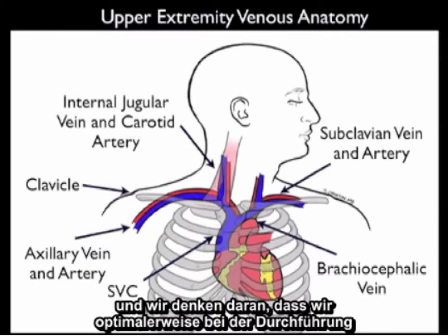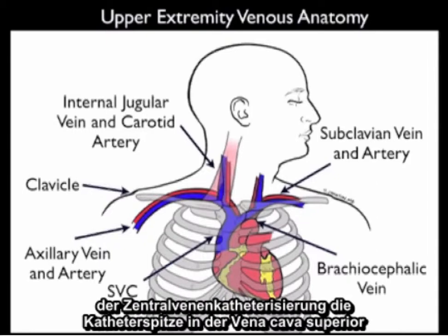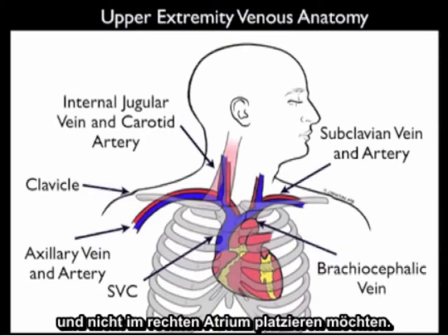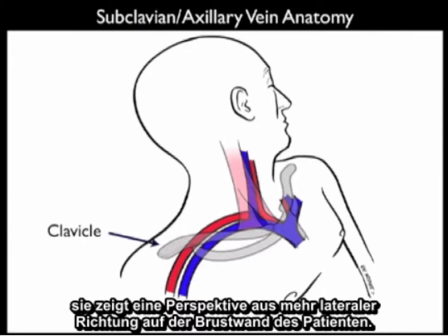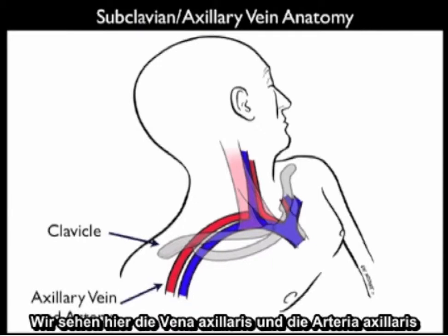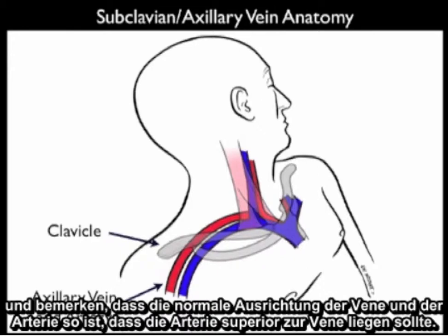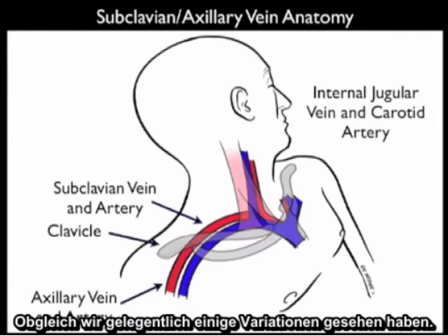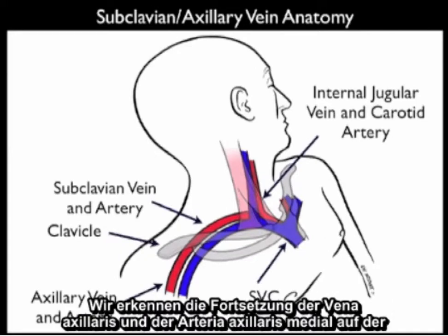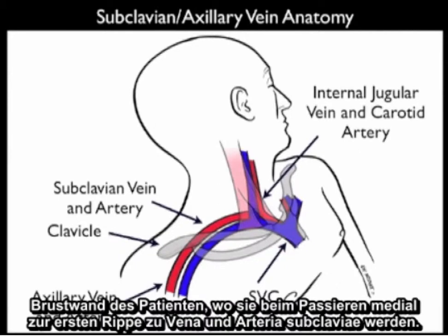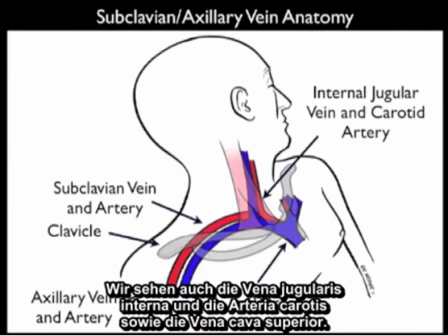Optimally, the tip of the catheter should be placed in the superior vena cava and not into the right atrium during central venous cannulation. Here's another anatomical image from a more lateral orientation showing the axillary vein and axillary artery. The normal orientation has the artery superior to the vein, although variation occurs and it is not unusual for the vein to be overlapped by the artery. We also see the continuation of the axillary vessels medially to become the subclavian vein and artery as they pass medial to the first rib, along with the internal jugular vein, carotid artery, and superior vena cava.